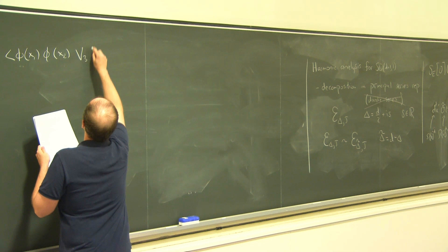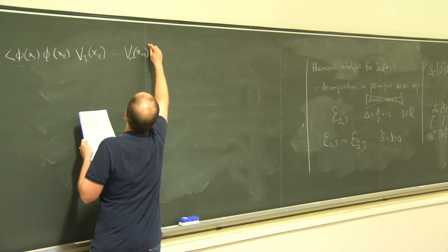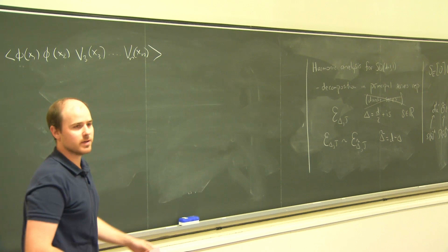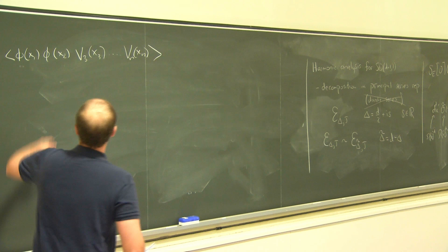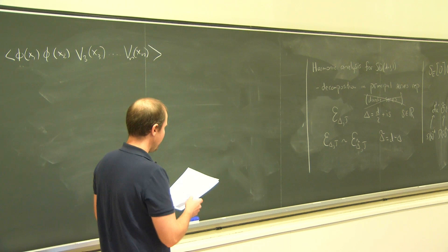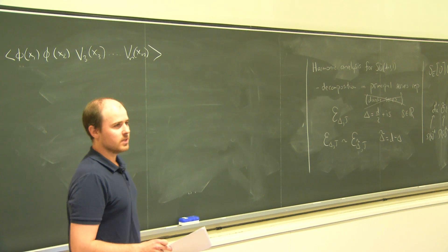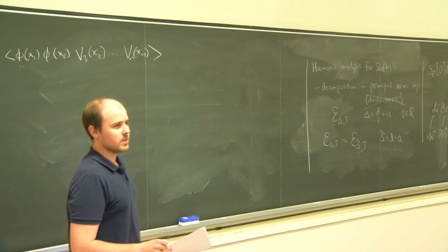In this analysis, it won't be important what these other operators are — it also won't be important that they're primary operators. This could be any linear combination of descendants of any operators you want. We're going to focus on how this correlation function behaves as a function of x1 and x2. Harmonic analysis tells us that if we look at how this function behaves as we act on x1 and x2 with conformal generators, then we can decompose that into principal series representations. What that means is that this correlator can be written as a particular sum over principal series representations.